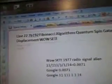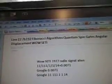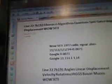922-7B192. Fibonacci algorithms, quantum spin gates, angular displacement, while setting.